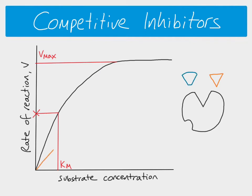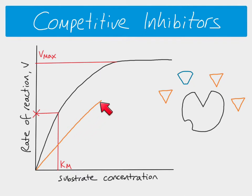When we have a competitive inhibitor, the initial rate of reaction is less, because the competitive inhibitor is able to block the entry of the substrate. In a given amount of time, fewer substrate molecules are able to enter the active site, so the reaction proceeds more slowly. At any given substrate concentration, the rate is going to be lower with a competitive inhibitor compared to without.